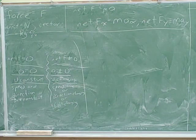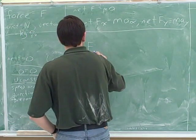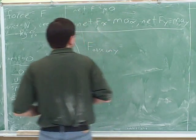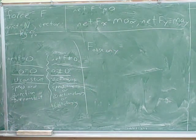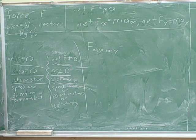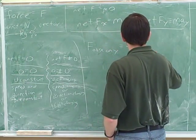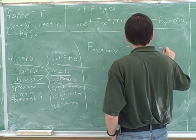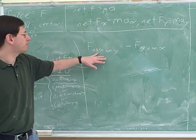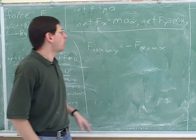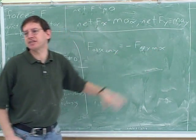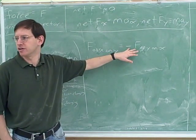Let's say that object x is exerting a force on object y. What does Newton's third law tell us? That the same force will be applied in an equal amount back — by y on x. This is Newton's third law: anytime there's a force of object x on object y, there will also be a force of object y on object x, equal in magnitude and opposite in direction. The negative sign here is to show that these are opposite in direction.